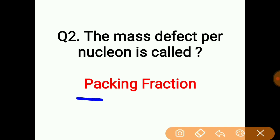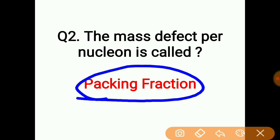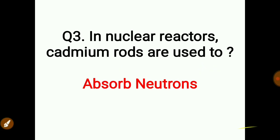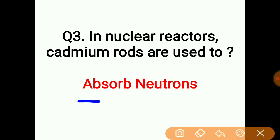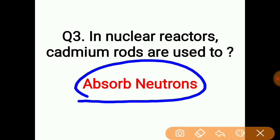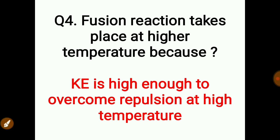The mass defect per nucleon is called packing fraction. In nuclear reactors, cadmium rods are used to absorb neutrons.